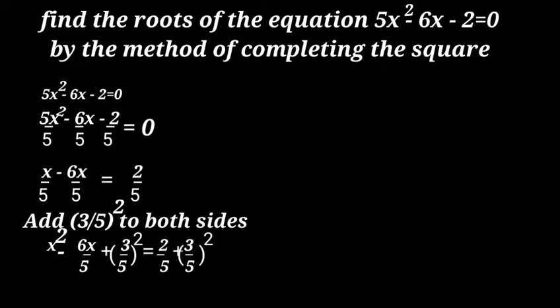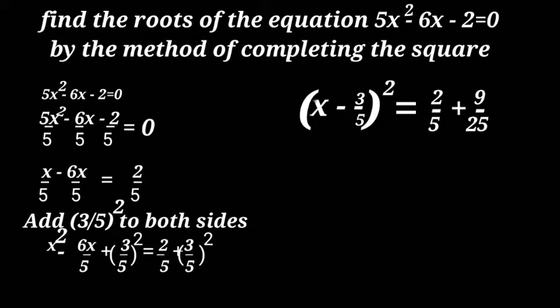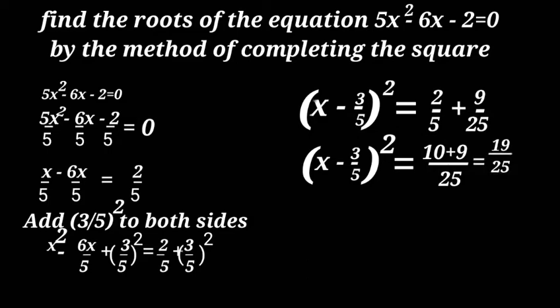Here, (x - 3/5)² = (10 + 9)/25 = 19/25. Then,